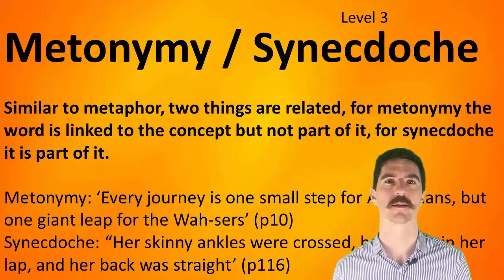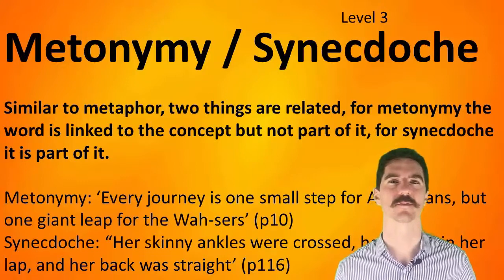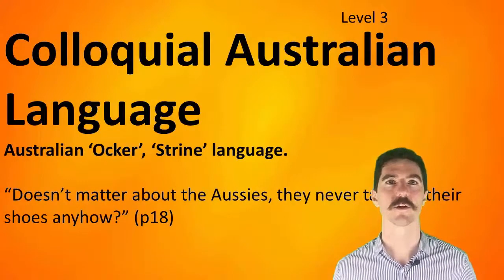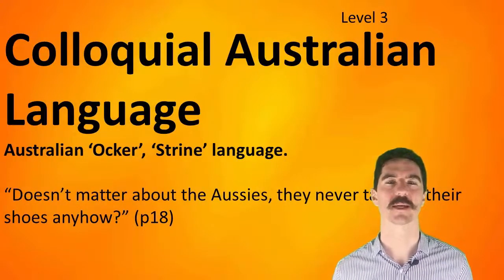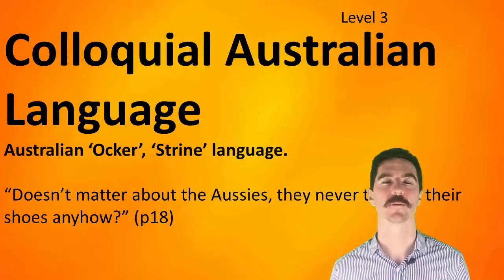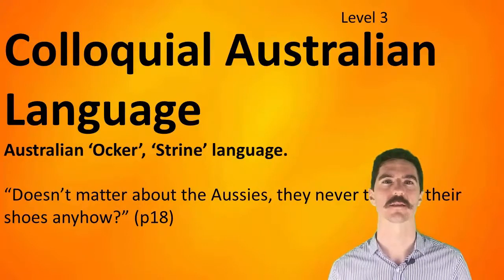For our synecdoche example, we have discussion of her slender ankles and crossed legs. This is obviously part of the girl being described, but it sort of represents her as a bigger aspect — she's the polite, well-mannered female in this role.